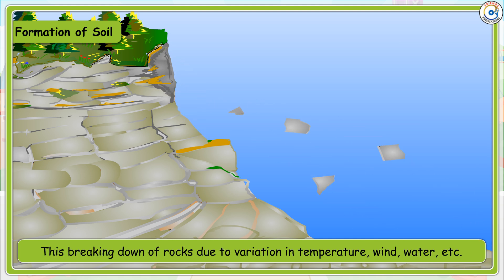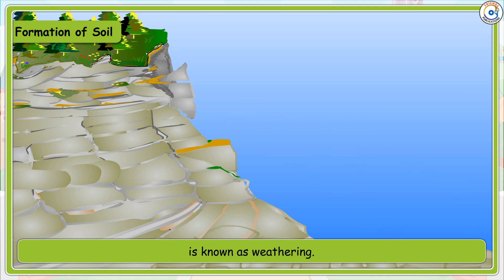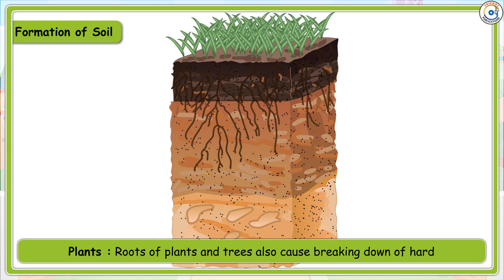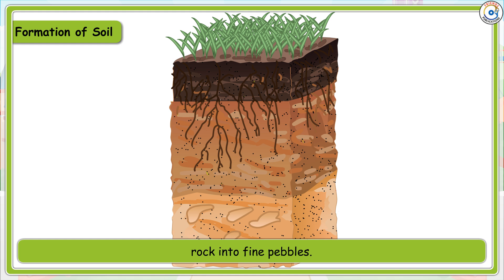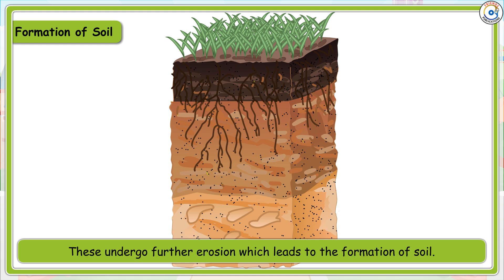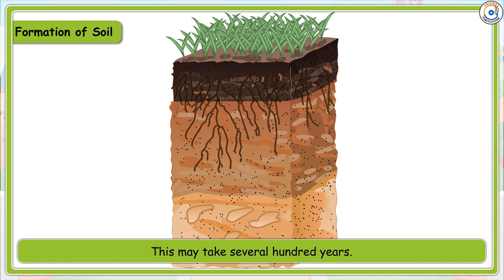This breaking down of rocks due to variation in temperature, wind, water, etc. is known as weathering. Roots of plants and trees also cause breaking down of hard rock into fine pebbles.